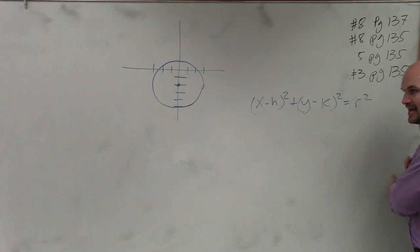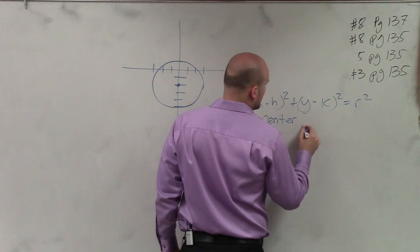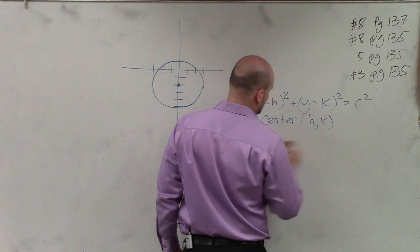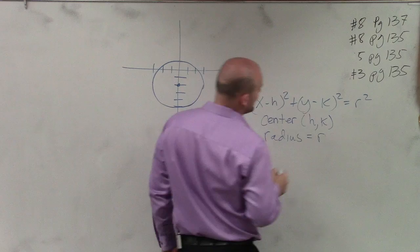So what do h, k, and r represent? Remember, the center is represented by (h, k), while the radius is represented by r.